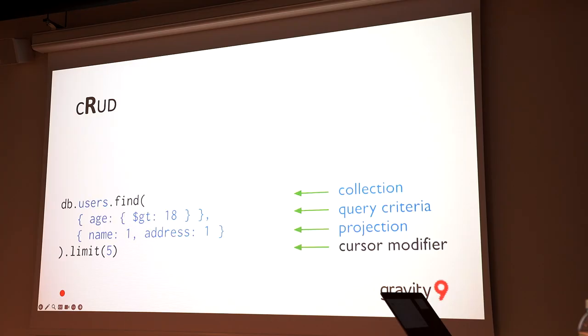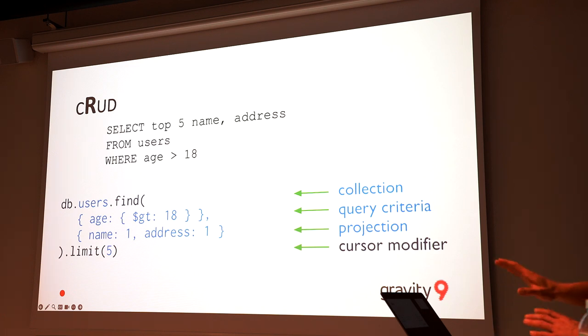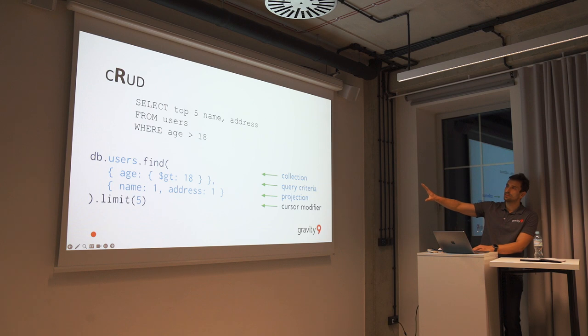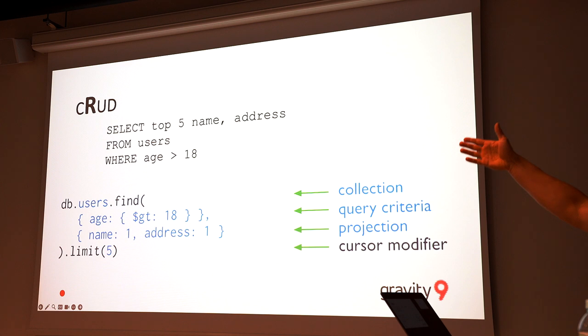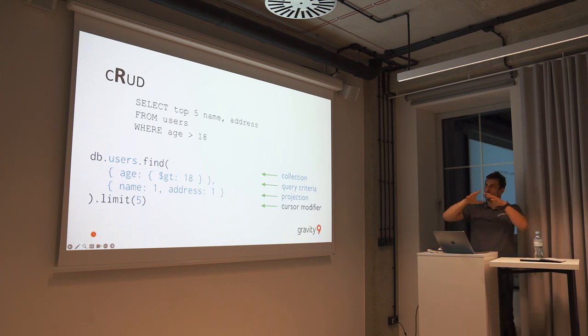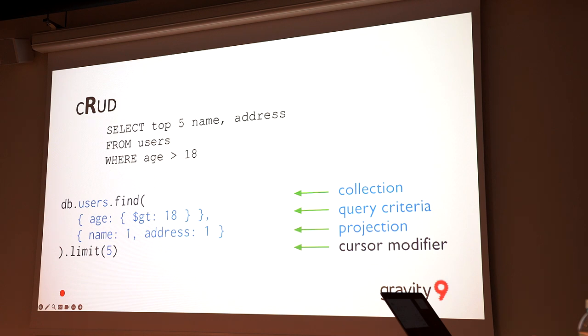Read operation. The SQL equivalent would be: select top 5 name and address from users where age > 18. The same in MongoDB: you reference the users collection, use find — equivalent to SELECT — with the condition age greater than 18, specify you want name and address, then limit results by five. All the conditions go inside find, corresponding to the WHERE clause in SQL.